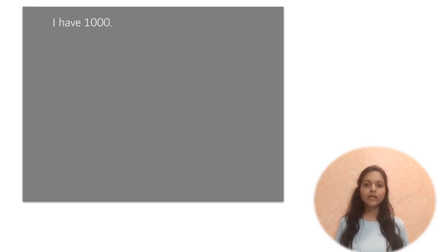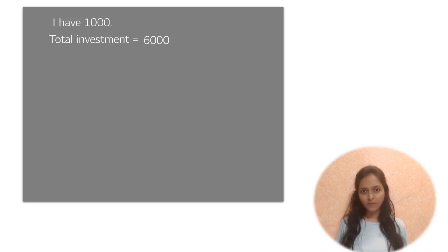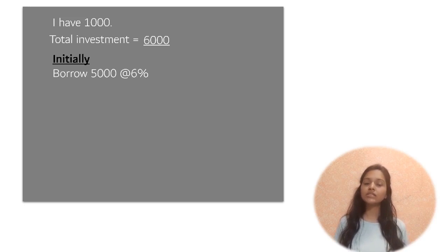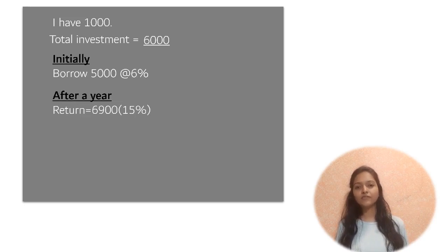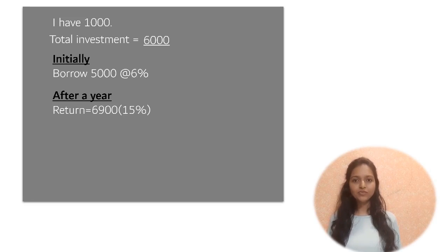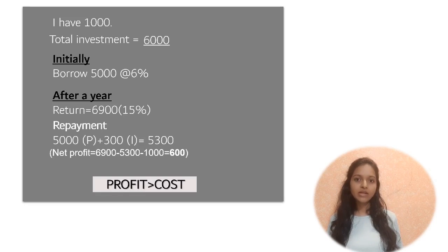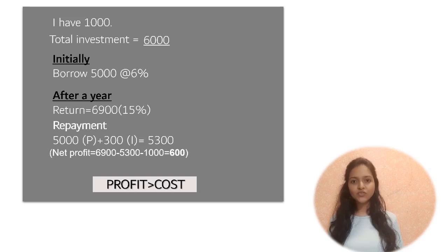Here's a small example: suppose I have a thousand but the total investment required is six thousand. Because I need five thousand more, I borrow it, for which I need to pay six percent interest. After a year, the invested amount of six thousand grows to six thousand nine hundred, giving me a return of fifteen percent. I'm clearly in profit even after paying off all the borrowed amount.